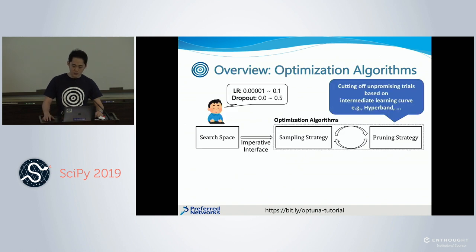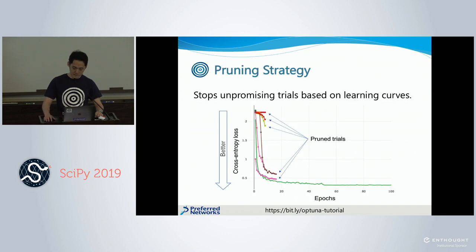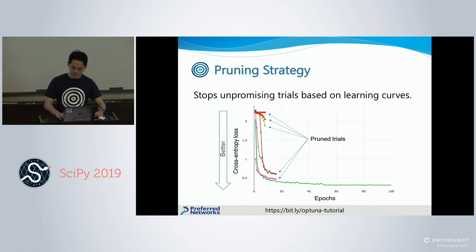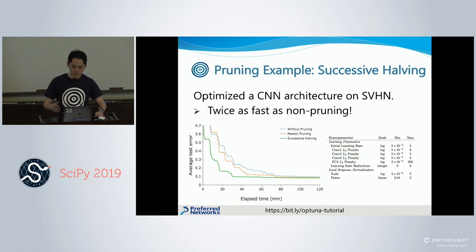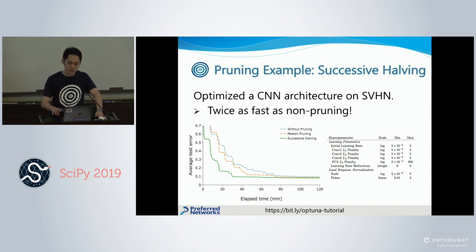Now let me describe the pruning component. Pruning automatically stops unpromising trials by looking at the intermediate learning curve. We found that what is called successive halving shows outstanding performance in pruning — it is based on bandit theory. Our benchmark shows that successive halving makes your optimization almost twice as fast. So just turning on this feature, you can make your optimization much, much faster.